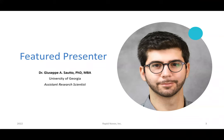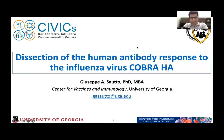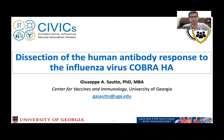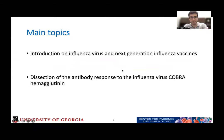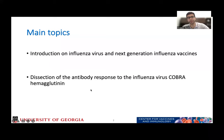Hello everybody. My name is Giuseppe Sautto, and I'm an assistant research scientist in the Center for Vaccine and Immunology at the University of Georgia. First of all, I would like to thank the organizers for inviting me to talk about one of my main projects, which is focused on the dissection of the human antibody response to the influenza virus COBRA hemagglutinin. The main topics of my talk today: I'm going to give a brief introduction on influenza virus and next-generation influenza vaccines, and then the second part will be about the dissection of the antibody response to the influenza virus COBRA hemagglutinin.